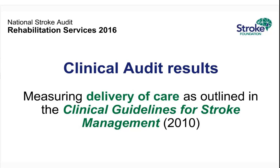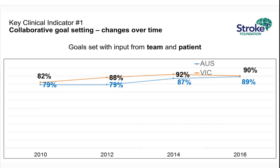Moving to clinical audit results, which specifically maps to the clinical guidelines currently being updated. We looked at about seven major processes of care indicators. The first indicator is goal setting with the team and the patient — fundamental for rehabilitation and done very well. Since 2010, nationally it's gone up from 80% to 90%, and Victoria — the orange line — has done very well. Really pleasing to see.